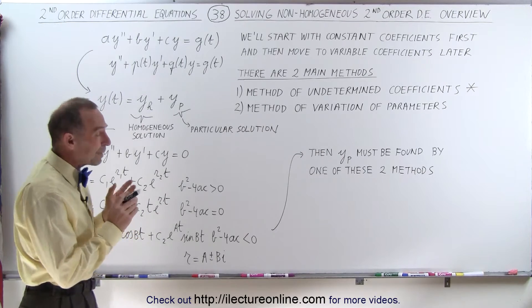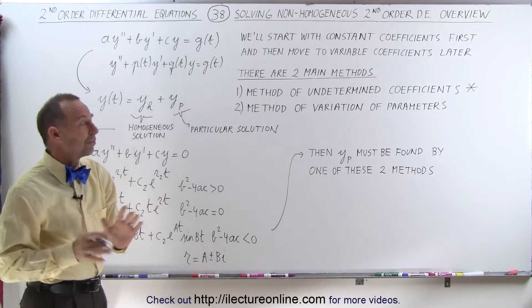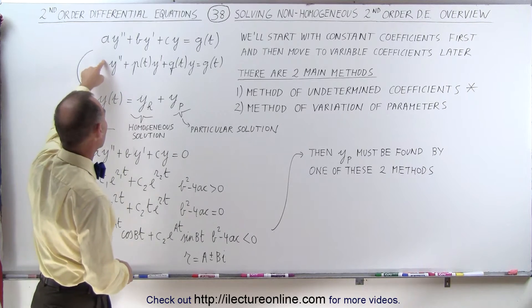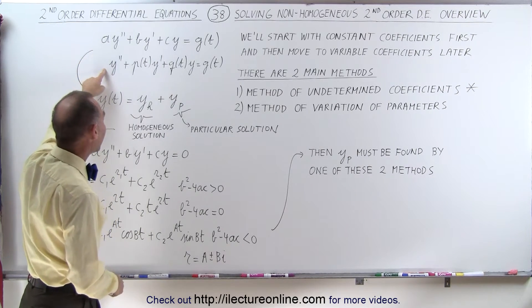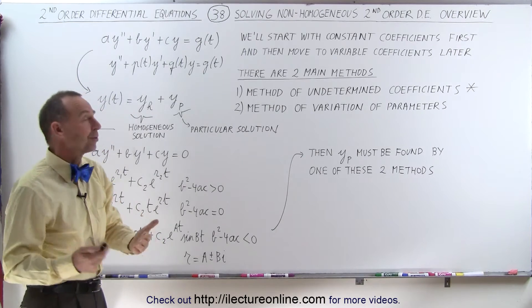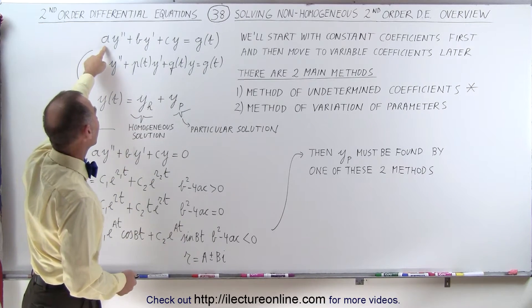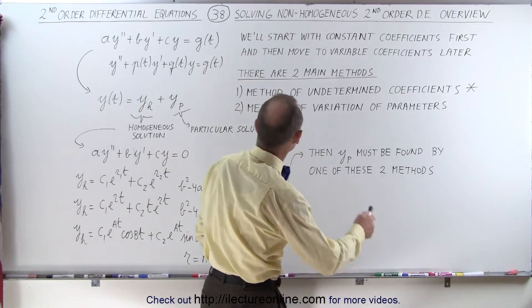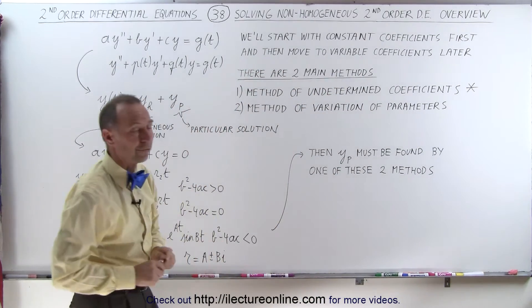So there's a big difference between solving these two different kinds. It is much more difficult to solve these types of equations compared to those type of equations. And therefore, we'll start with the simpler case where we have constant coefficients. So we'll start with constant coefficients first, and then we'll move to variable coefficients later.